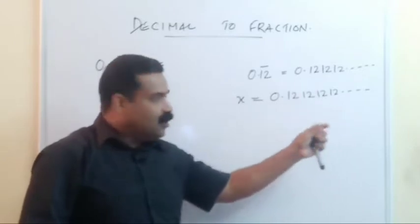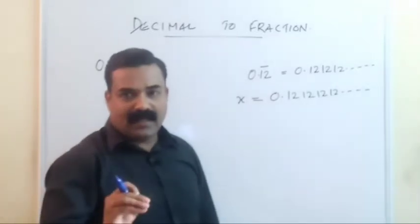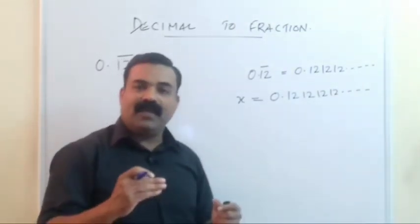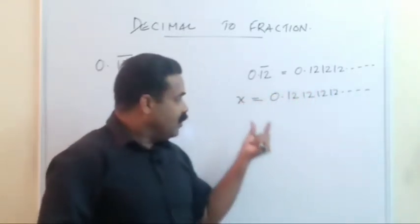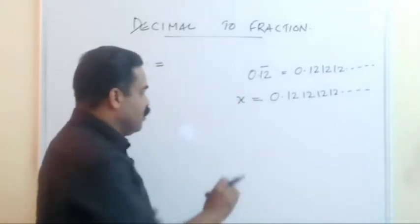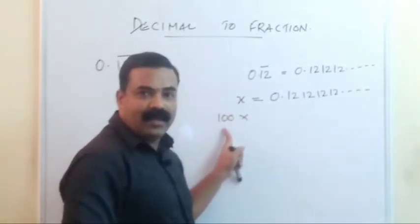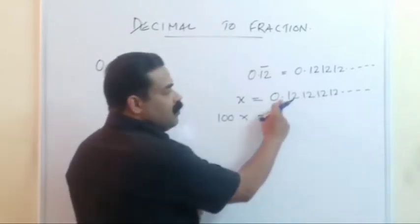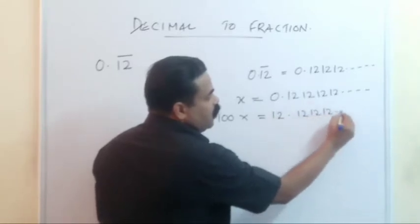How many digits are repeating? Two digits are repeating. When two digits are repeating, you have to multiply by 100. If only one digit is repeating, multiply by 10; if three digits are repeating, multiply by 1000, and so on. So here we multiply both sides by 100: left side becomes 100x, and the right side, moving the decimal two places, becomes 12.12121212 continuing.